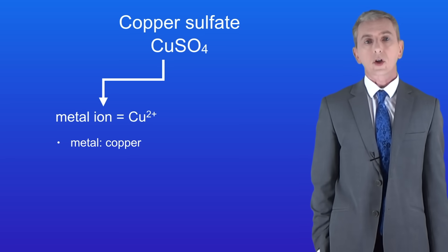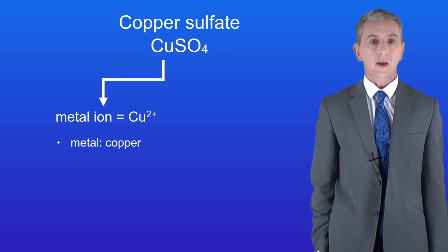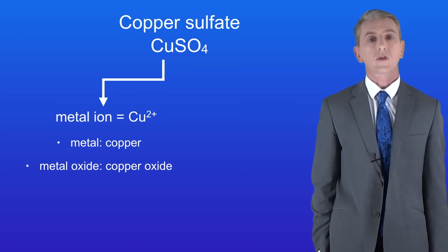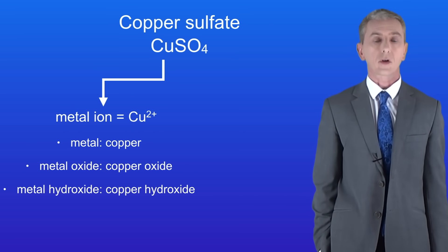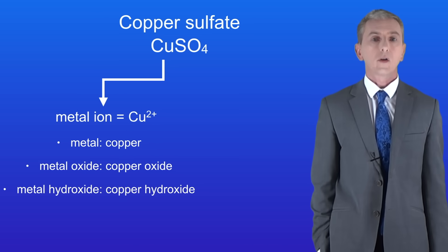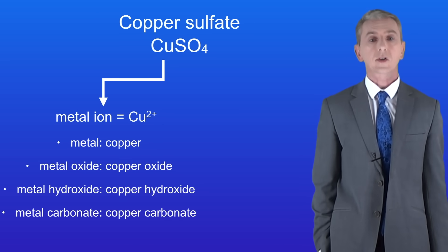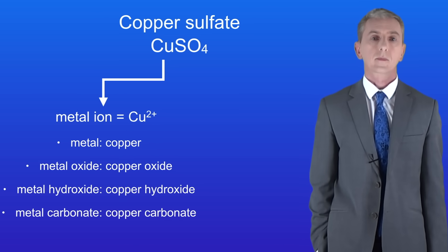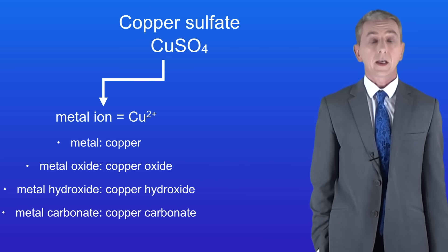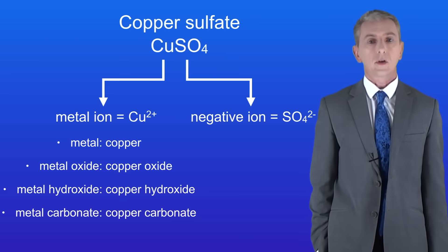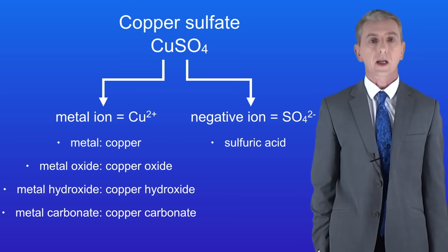The metal ion could also come from a metal oxide, in this case copper oxide. It could come from a metal hydroxide, in this case copper hydroxide. Or finally the metal ion could come from a metal carbonate, in this case copper carbonate. Salts also contain a negative ion and this comes from the acid. In this case the negative ion is the sulfate ion SO42-, and to make this we need to use sulfuric acid.